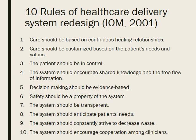Safety should be a property of the system — patients should be safe from injury caused by the care system, and reducing risk will require systems that help prevent and mitigate errors. The system should be transparent — making information available to patients and families so they can make informed decisions when selecting a health plan, a hospital, a clinical practice, or choosing among alternative treatments. Patients should be informed of the system's performance on safety, evidence-based practice, and patient satisfaction.